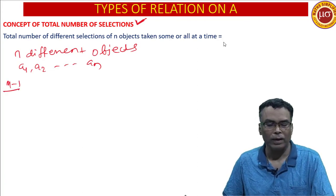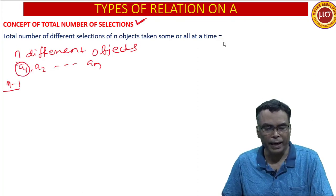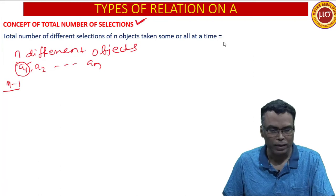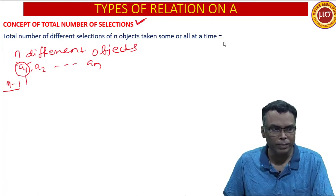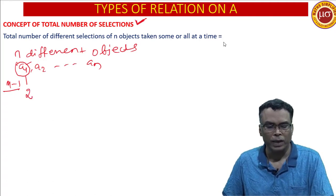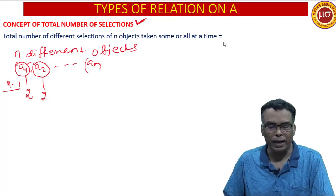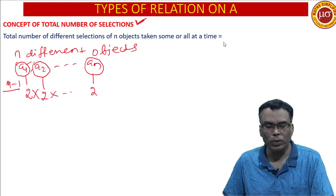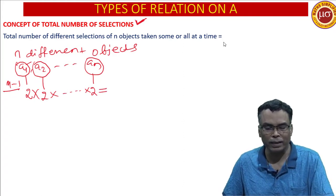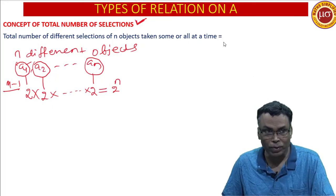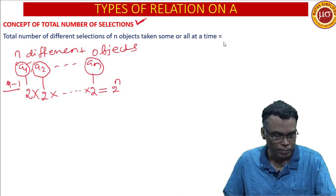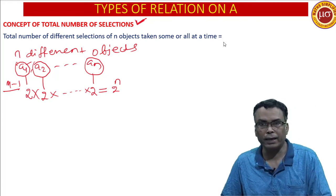Method 1: For a1, I can take a1 or I can leave a1 in a selection. So the number of selections for a1 is two ways — taking or leaving. Similarly for a2, I can take or I can leave — two ways. Like this for an — two ways. So total number of selections is 2 × 2 × 2 ... (n times) = 2 to the power n.